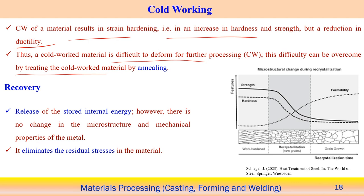With the annealing process applied, most forming operations include an intermediate annealing step after processing to restore ductility — at a compromise to strength. This is the purpose of annealing in cold working or any metal forming operation. Cold working can be described in terms of three stages: recovery, recrystallization, and grain growth.